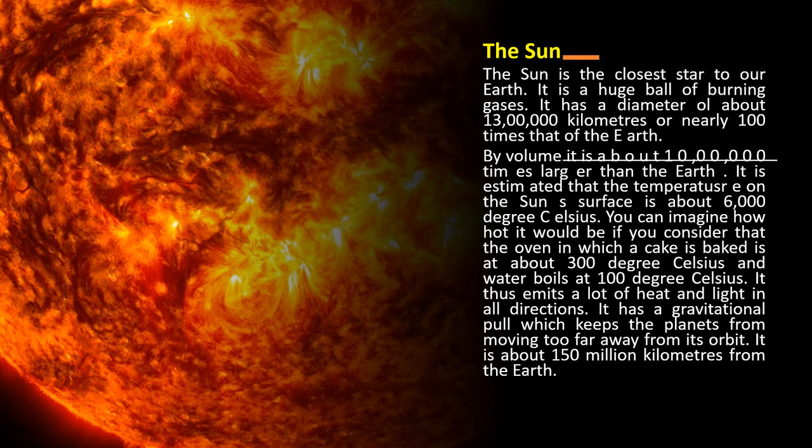At 6,000 degrees Celsius the sun emits a lot of heat and light in all directions. It also has a gravitational pull which keeps the planets from moving too far away from their orbits. The sun is about 150 million km away from the Earth.